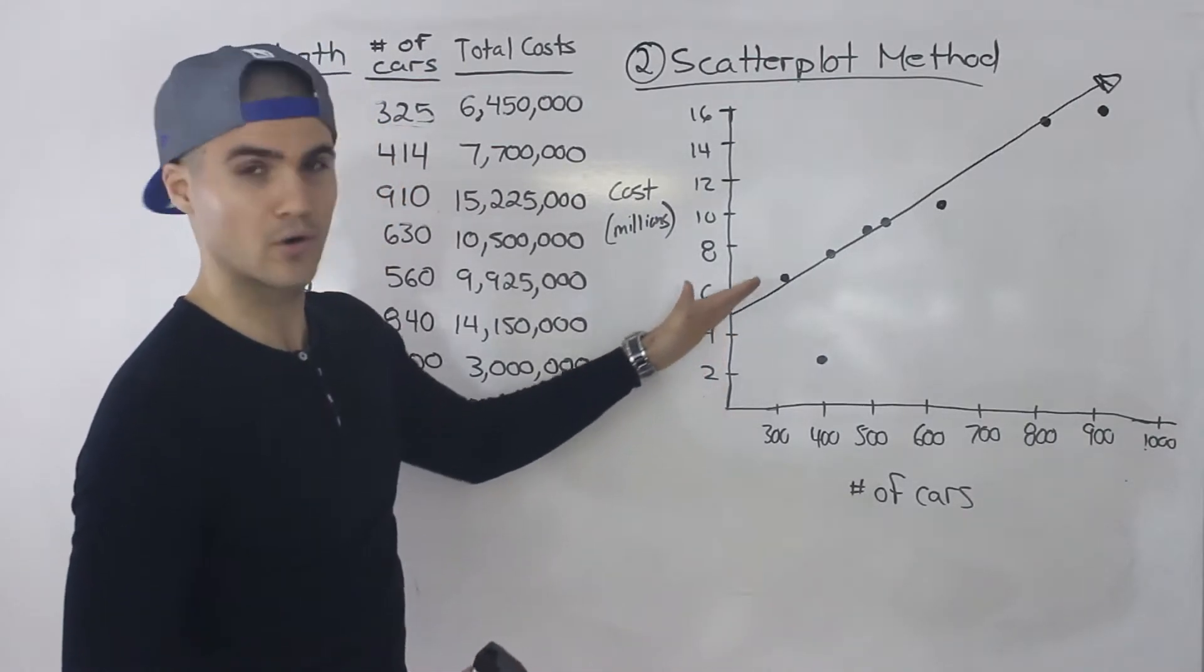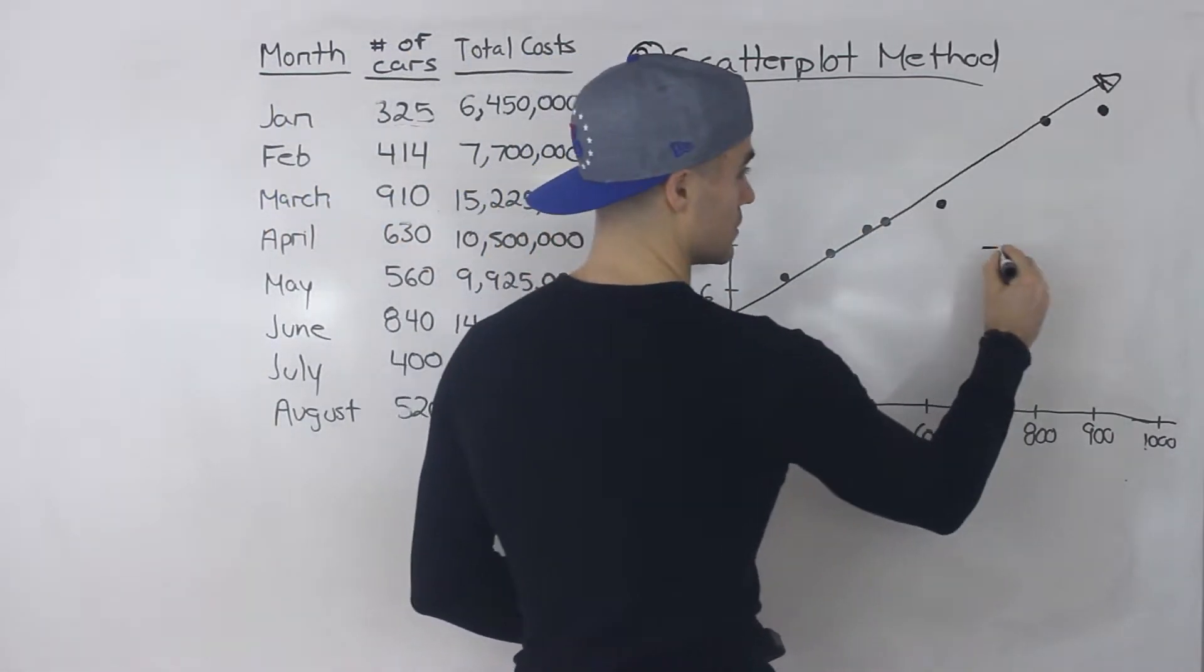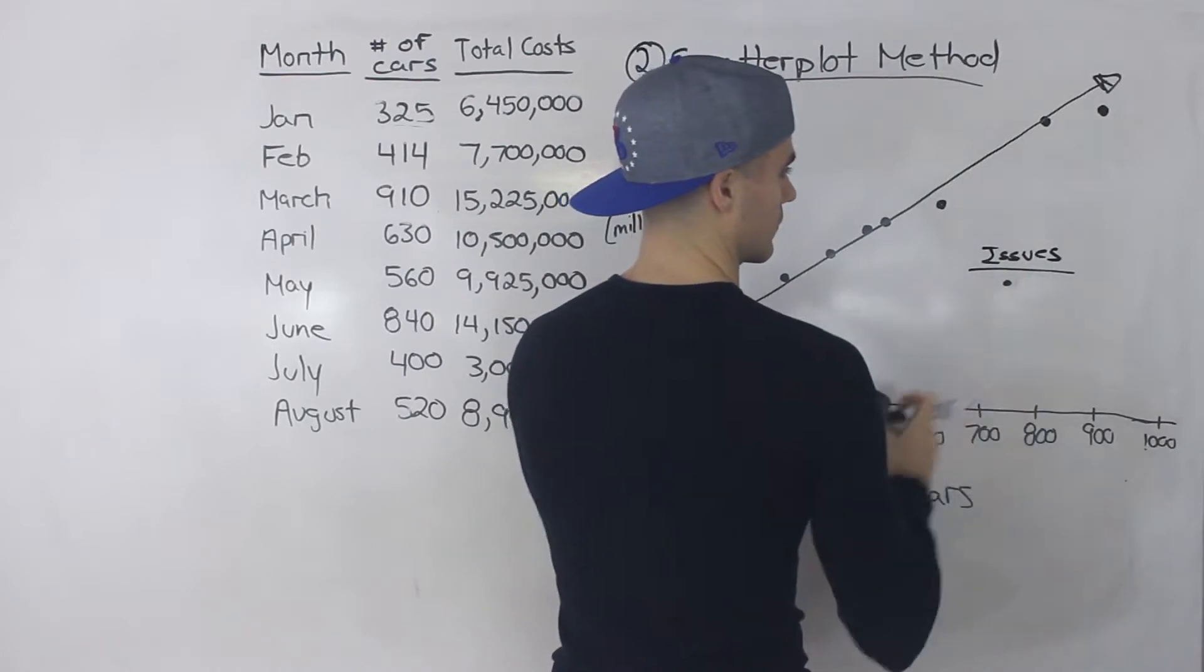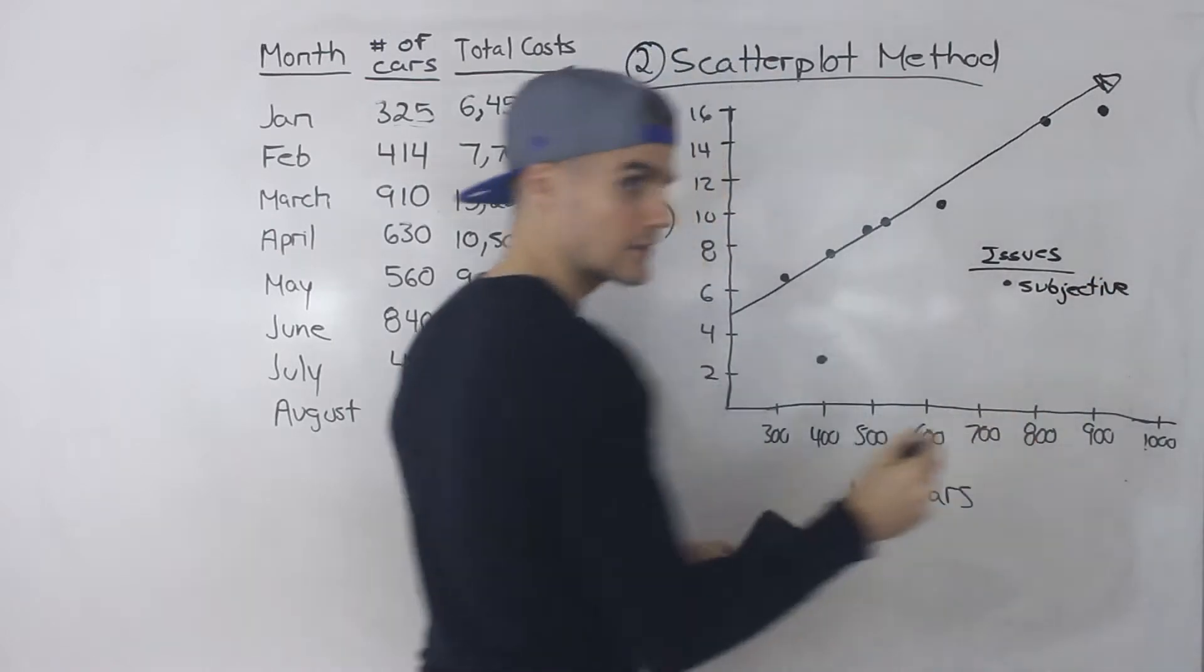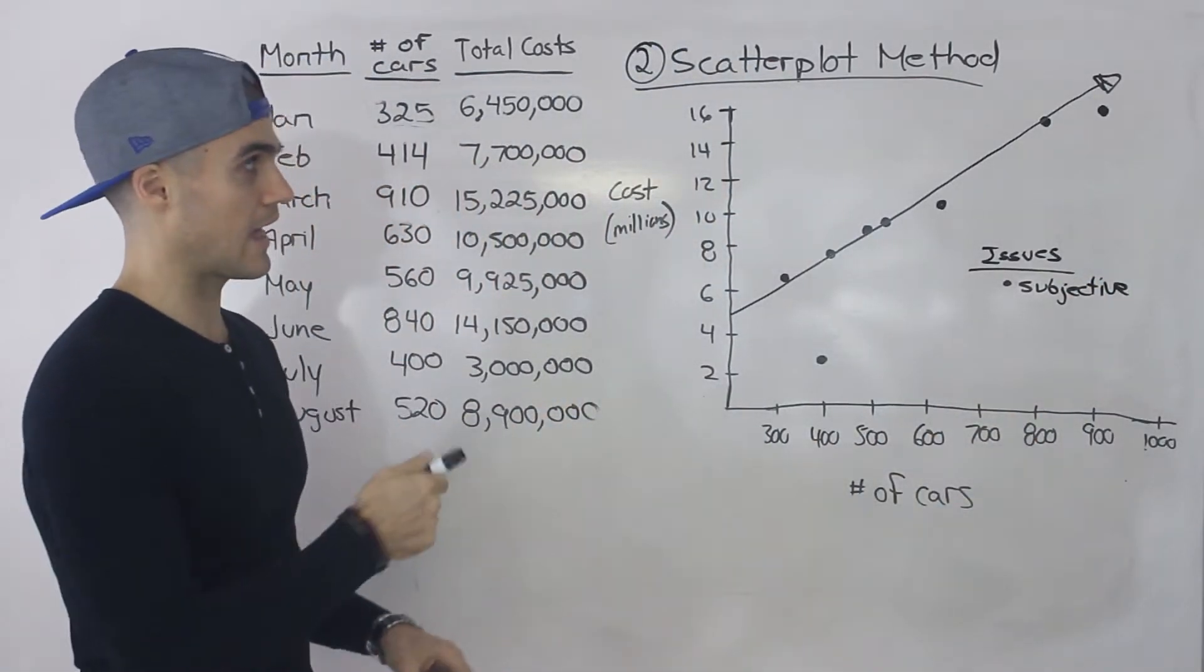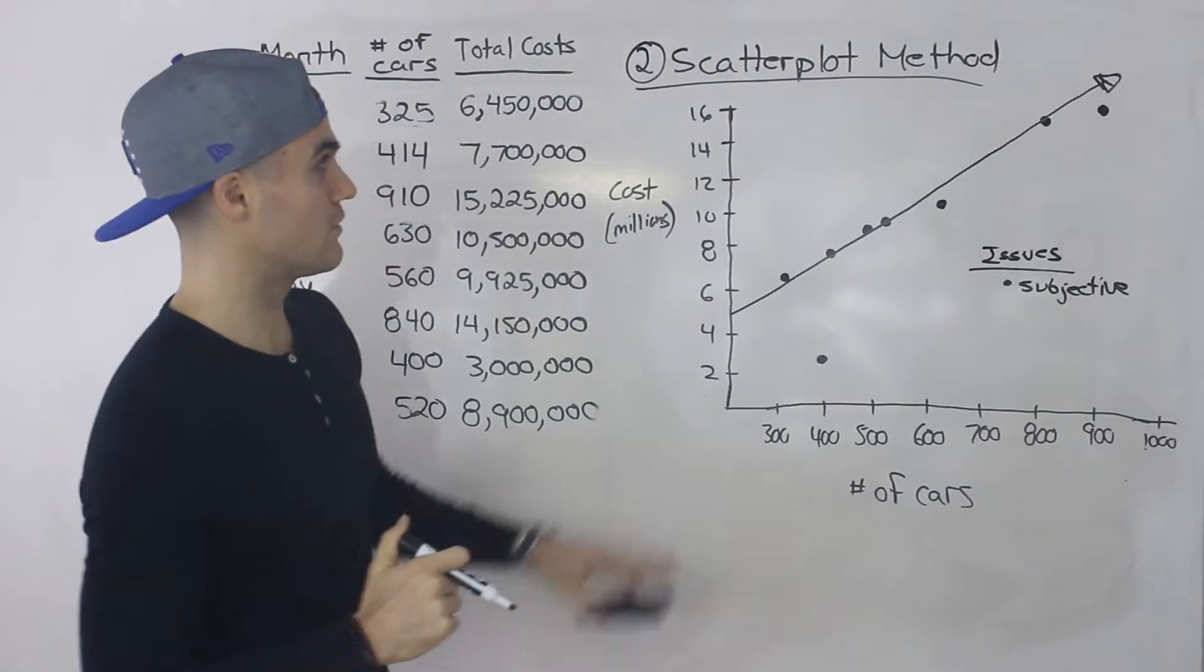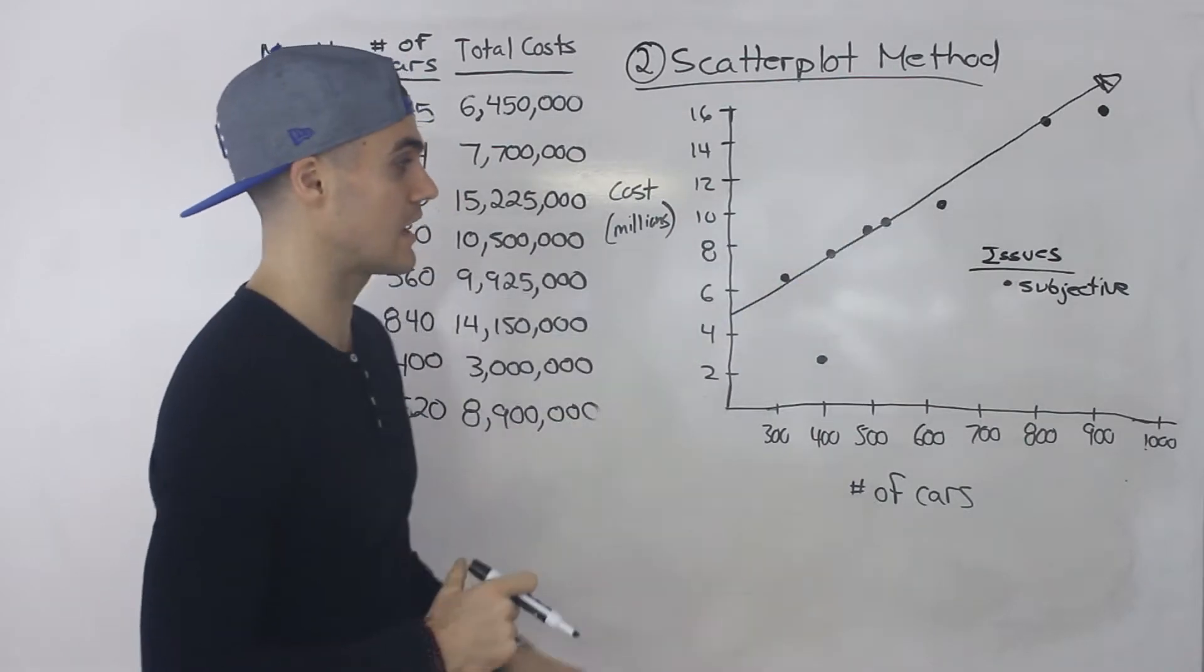But notice here how I'm kind of estimating this. So that's actually one of the issues with the scatterplot method is that it's subjective. It's not very objective. Like the high low method we actually did math to get that equation. And the next method the least regression analysis is going to be very objective as well. This method the scatterplot method is very subjective. I'm just kind of drawing the best line I can.